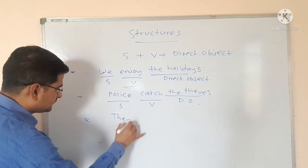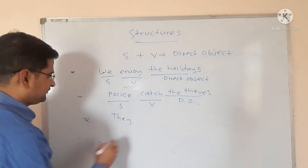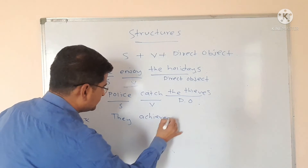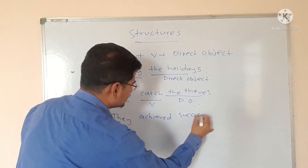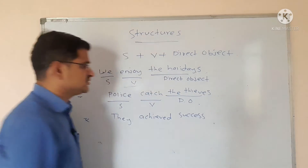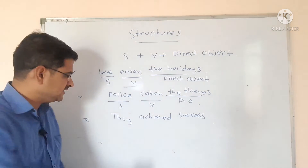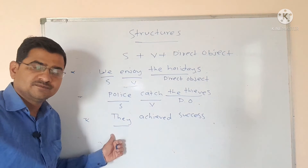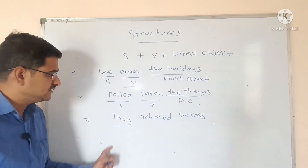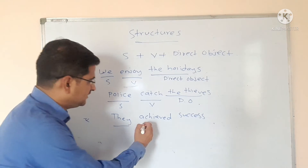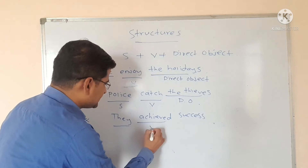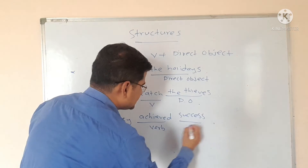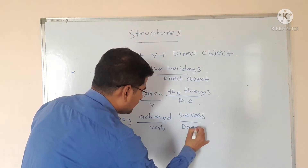They achieved success. Here, 'they' is an example of a subject because it is the doer of the action. 'Achieved' is an example of a verb, and 'success' is an example of a direct object.